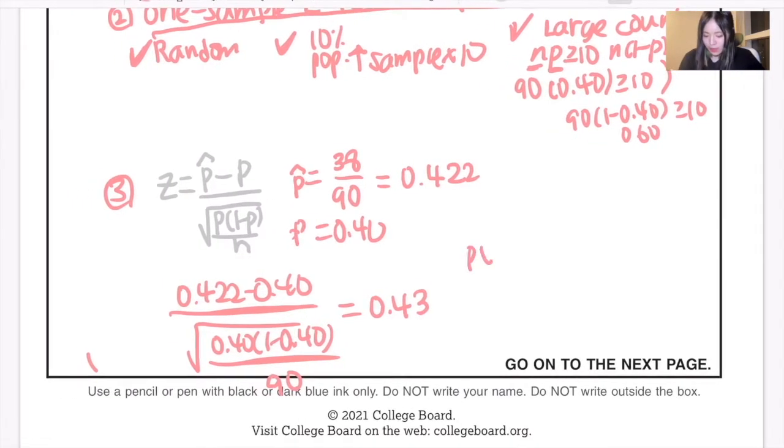And for the p-value, this is your test statistic. And the p-value would be 0.3336. And now that you get your p-value, you can make a conclusion.